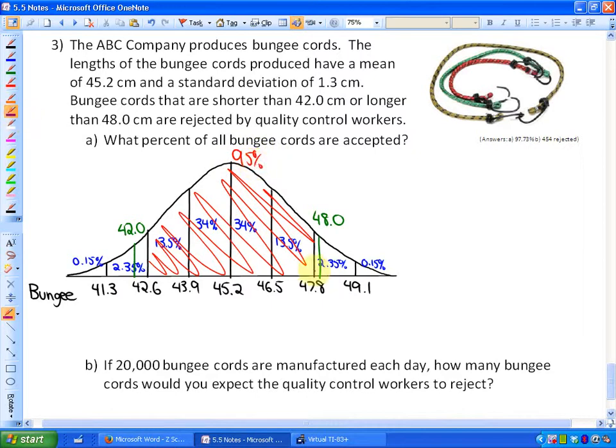I would estimate this side here, this little bit here, to be maybe like 0.3% or so. And also this section here, which is a little bit bigger, to be, again, roughly maybe 1%. So if I was estimating, I would say that they are going to accept 1% plus 95% plus 0.3%. I'm going to guess about 96.3%. That's my estimate.